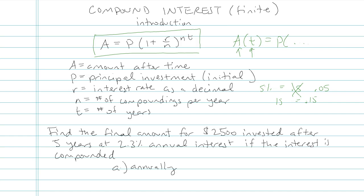Find the final amount for $2,500 invested after 5 years at 2.3% annual interest if the interest is compounded annually, quarterly, daily, continuously. Okay. So first thing, we have to figure out what these numbers represent.